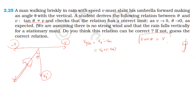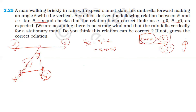The formula tan theta equals v is not correct. The left side, tan theta, is dimensionless — a trigonometric ratio has no dimension. But the right side, v, has dimension of velocity, which is LT to the power minus 1. So the dimensions are not consistent. The opposite side of the triangle corresponds to the velocity of rain, and the adjacent side to the velocity of man.